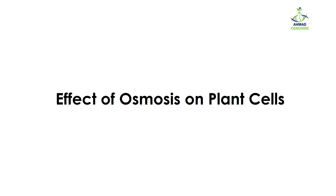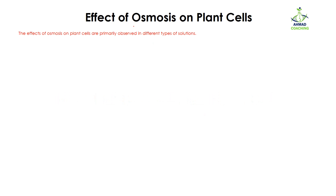Hi learners, welcome to AMAT Coaching. I'm your teacher Dr. Anam. Today we will study about the effect of osmosis on plant cells. Osmosis is the movement of water molecules from higher water potential to lower water potential through a selectively permeable membrane. So how does the movement of water molecules affect cell structure and its functioning?